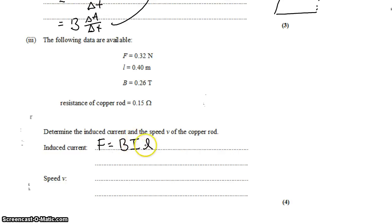So that current is the force divided by BL, the force divided by BL, which works out to 3.1 amps.